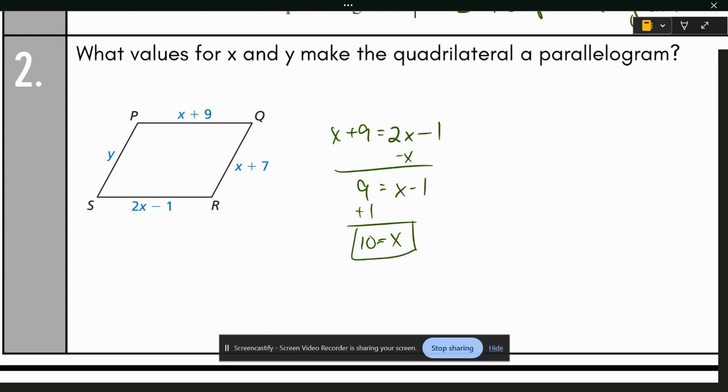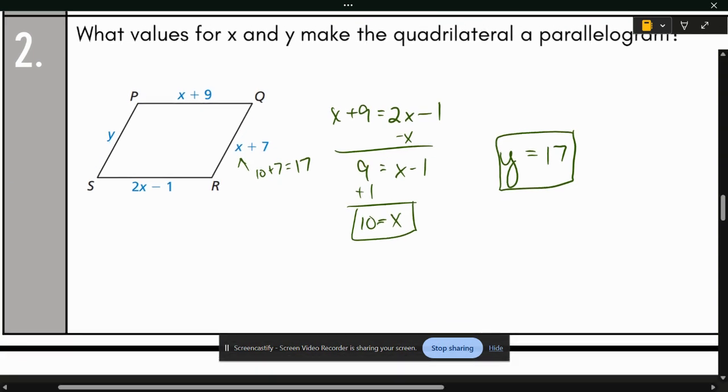From there, we can use that X and substitute it in for here to get 10 plus 7 is equal to 17. That would mean that Y then was also equal to 17 because opposite sides are congruent. Questions at all? Questions at all?